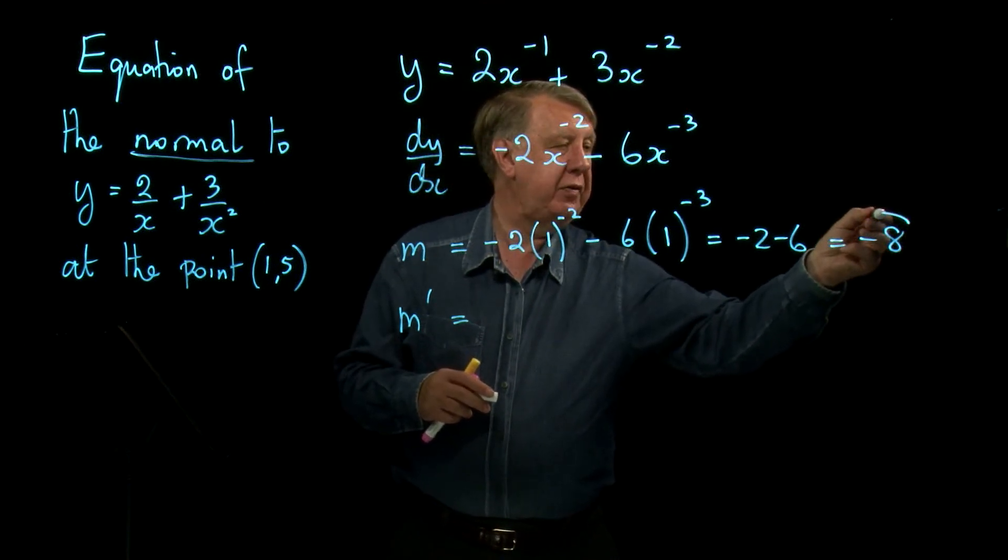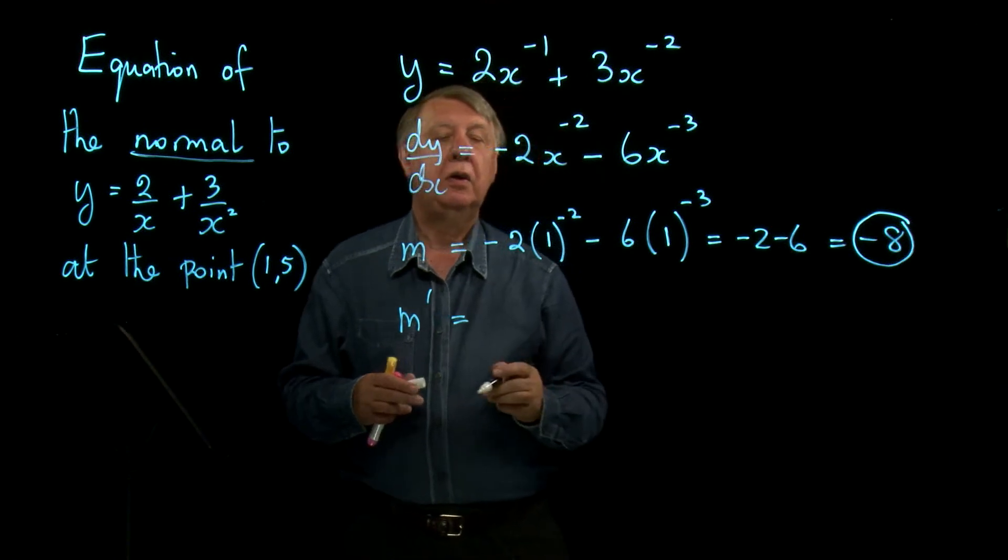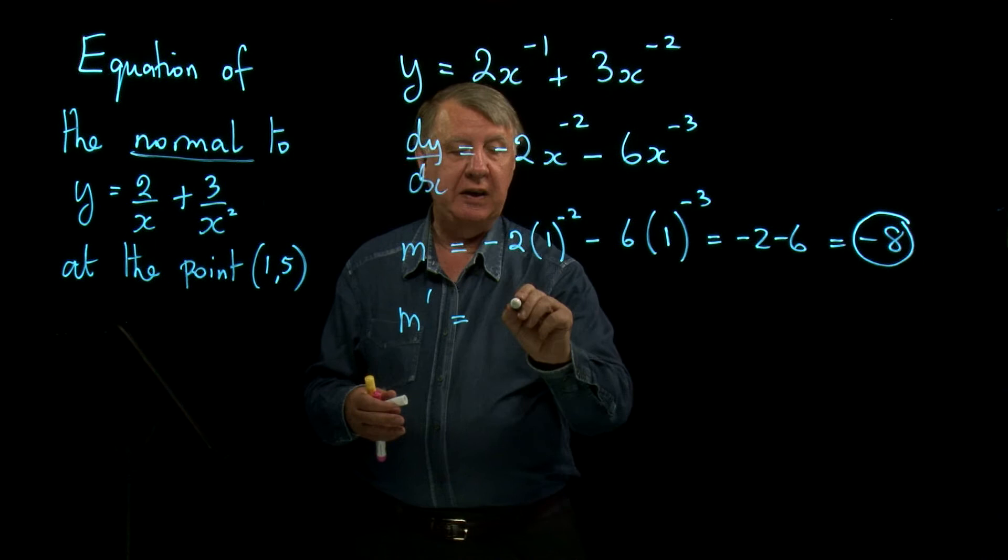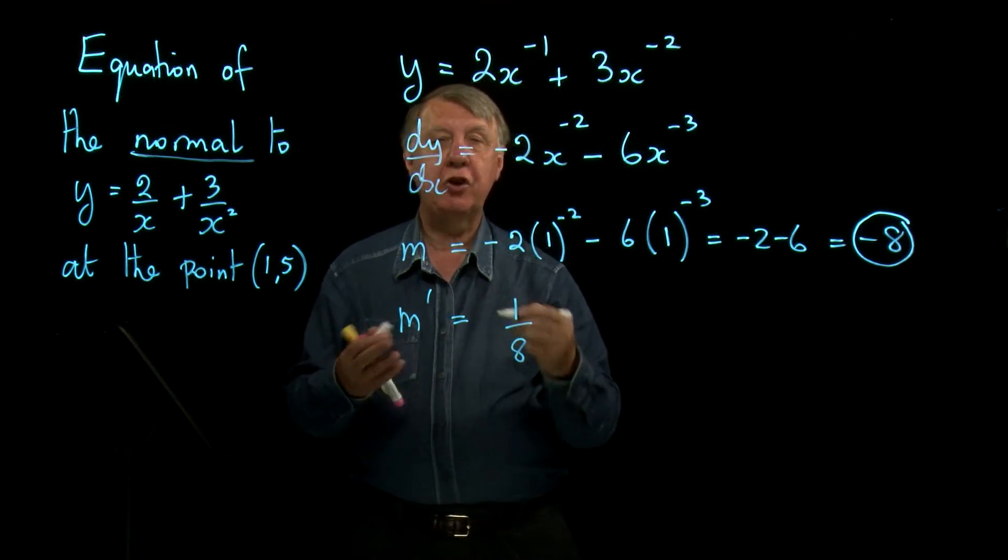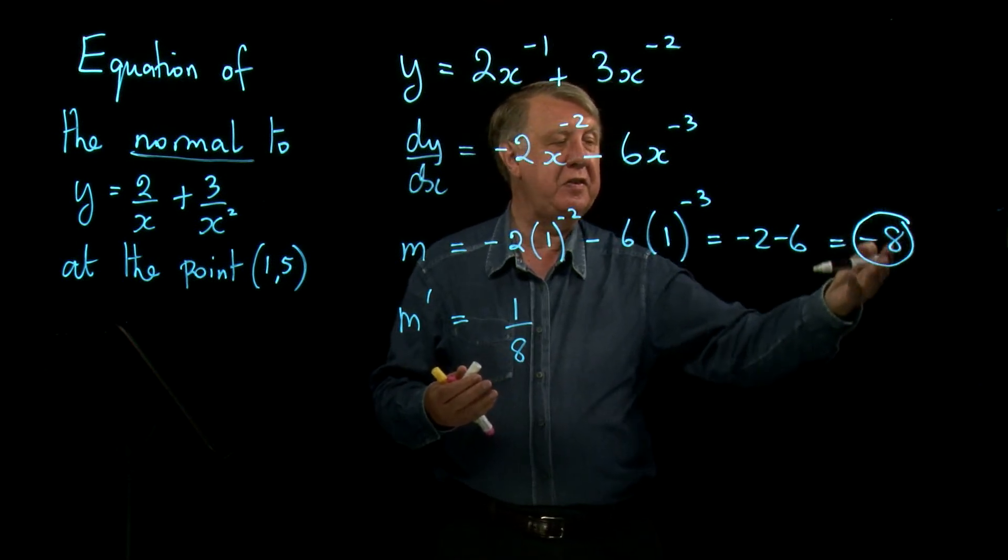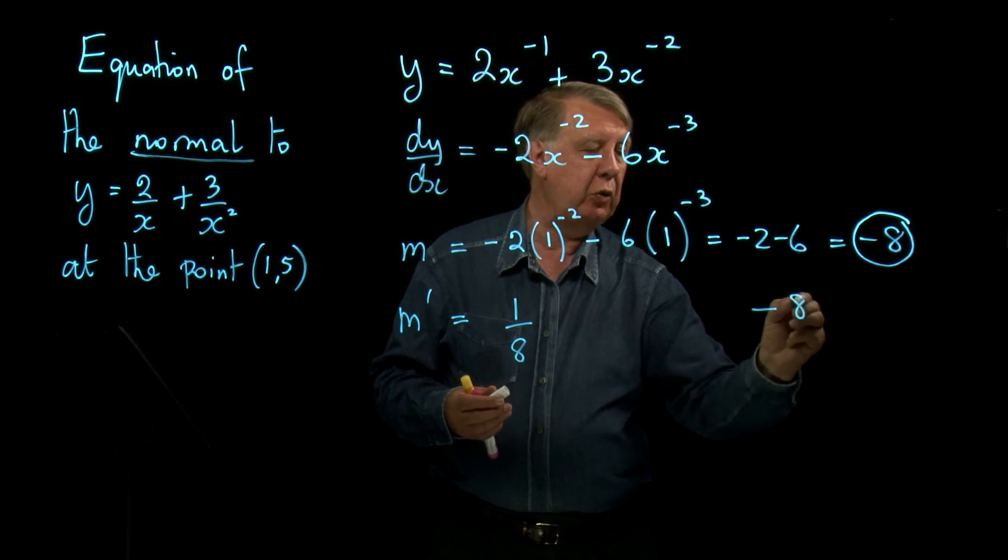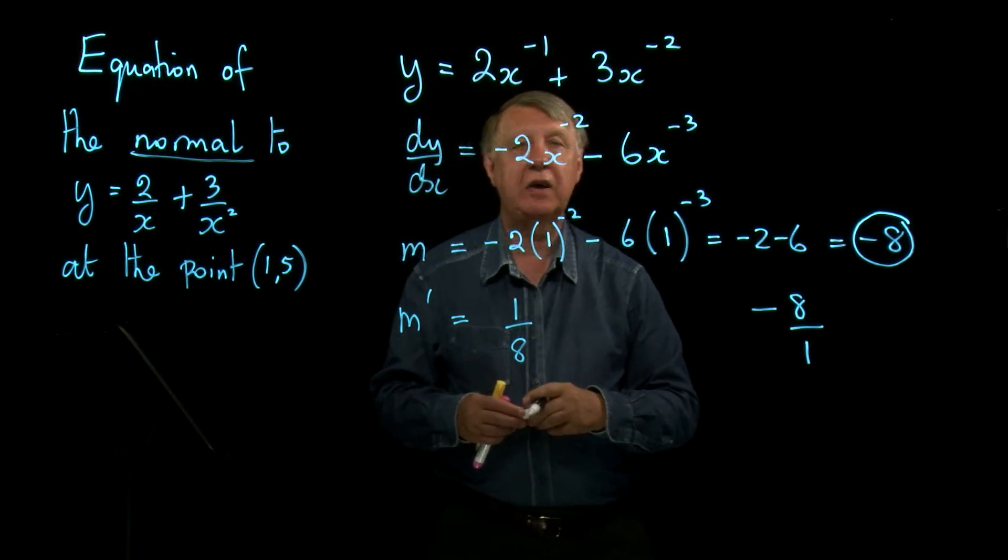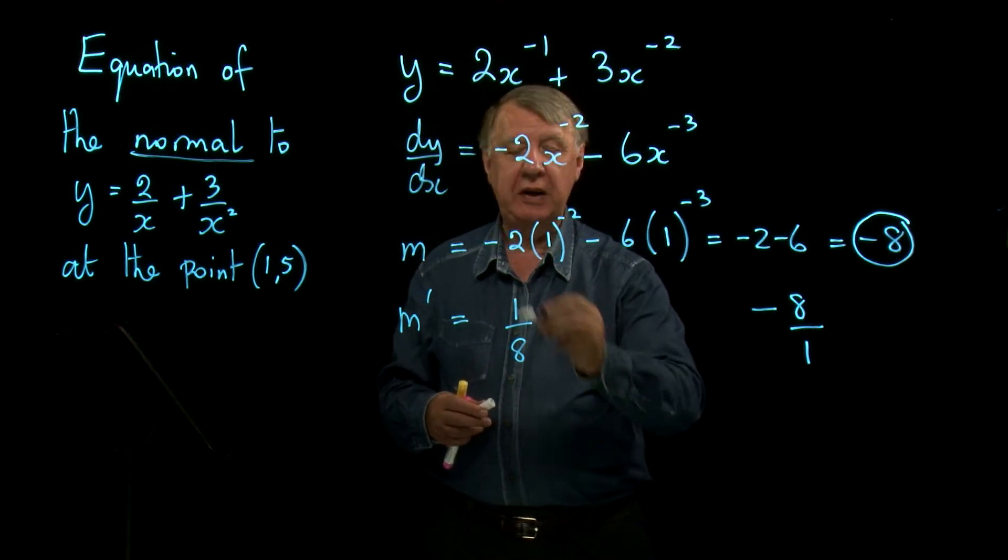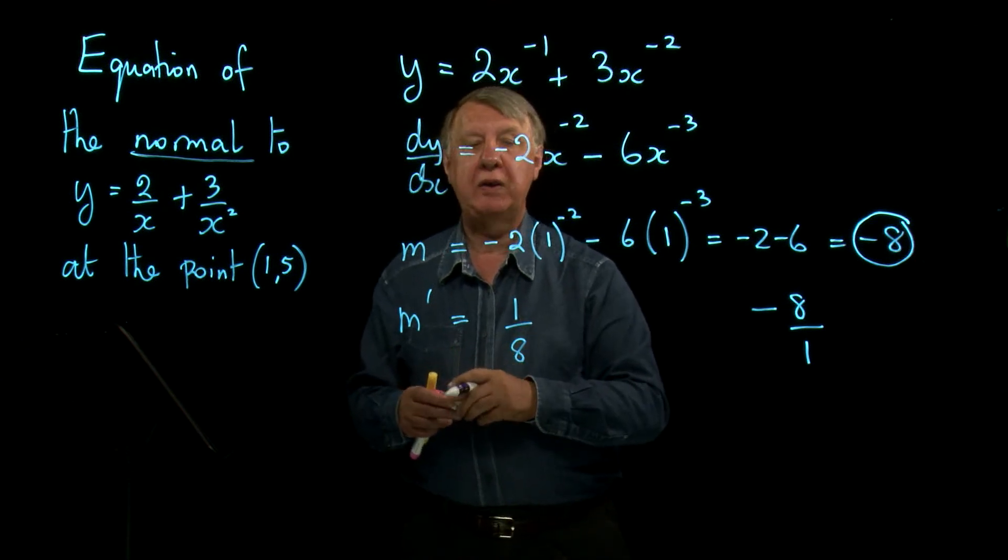Now, just be careful here. Because this is an integer, I need the reciprocal of that integer, which is 1 over 8. And I have to change the sign. So remember, you invert the fraction. Now, this isn't really a fraction unless I remember that, of course, I can write it as negative 8 over 1. So if I invert that, it becomes 1 over 8. If I change the sign, it becomes plus 1 over 8.